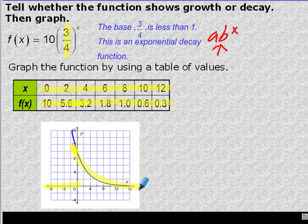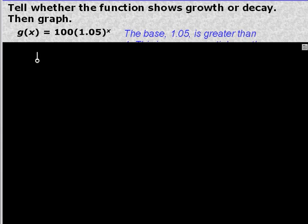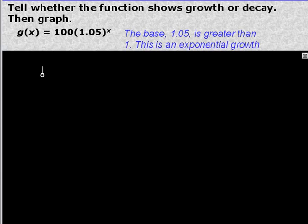But you would be able to plot it so that you can see it's looking that direction. And again, you're not going to get negative numbers. Next example. Tell whether the graph shows function or decay than graph. So here is my function. a·b^x is my model. If this is my base, my base this time is 1.05, which is greater than 1. So this is going to be a growth function.